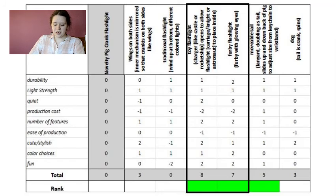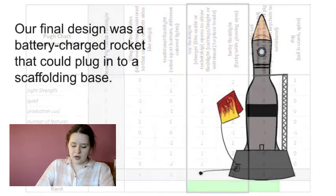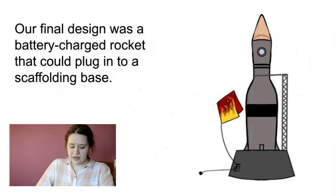After deciding on an idea, we revised it heavily. Our final product was a rocket that could sit in a holder shaped like scaffolding to charge. The tip of the rocket was the flashlight, and was covered in a semi-opaque material similar to a plastic ceiling light cover that would mute the light slightly so that it was safer for children to look at.